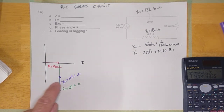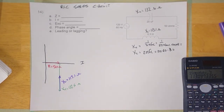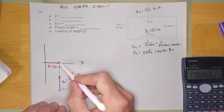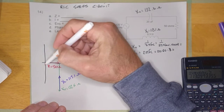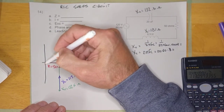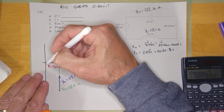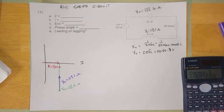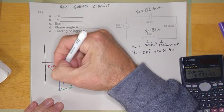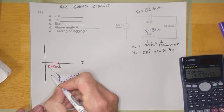Okay guys, welcome back. We've been drawing phasors here. I'm going to go right from where I left off. I've got my three phasors now drawn, all tip to tail. The impedance is going to be the phasor sum of the three — a line that starts at the beginning of the first one and ends at the end of the last one.